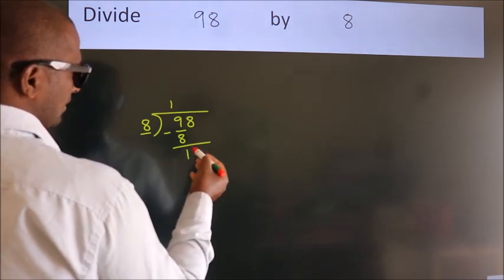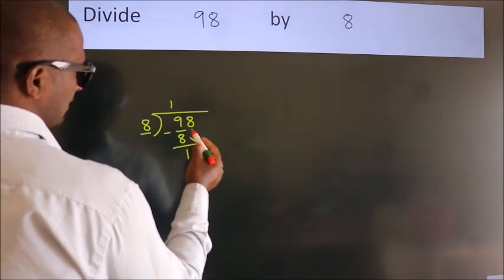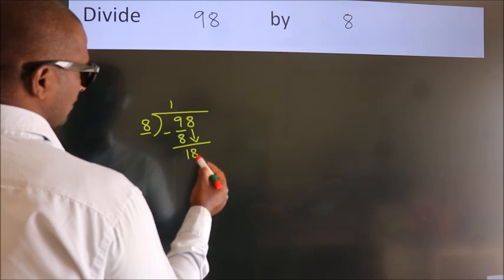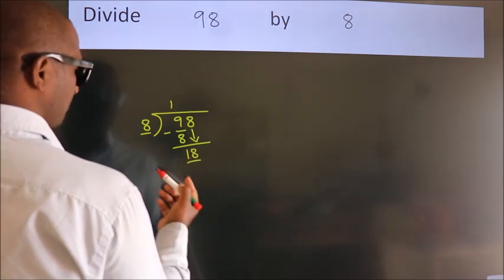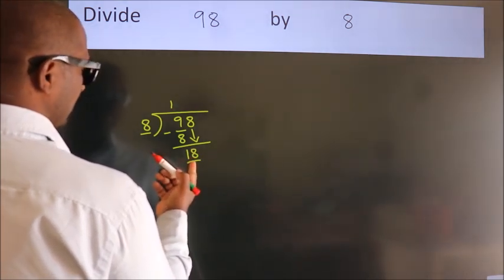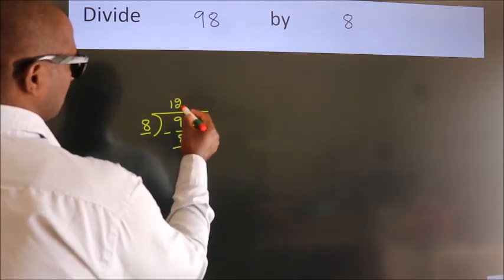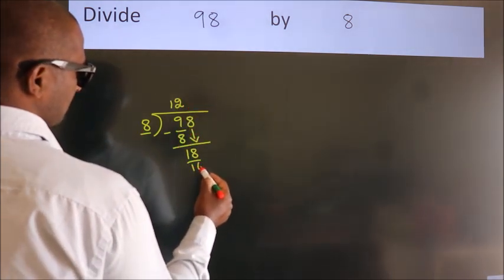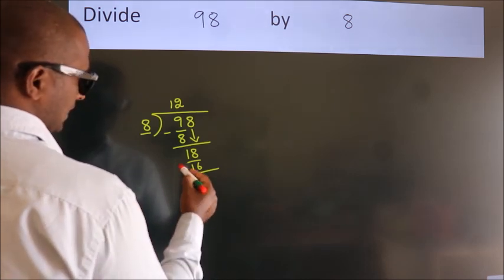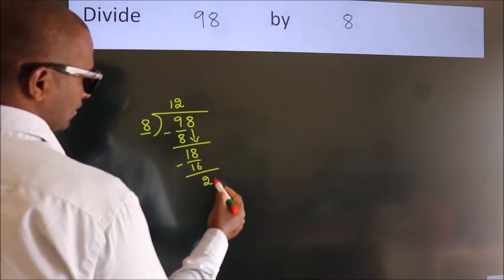After this, bring down the beside number. So 8 down, giving us 18. A number close to 18 in the 8 table is 8 times 2 is 16. Now we subtract and get 2.